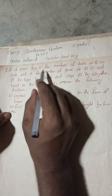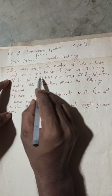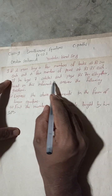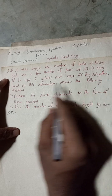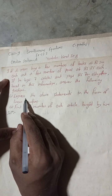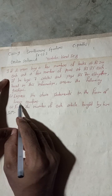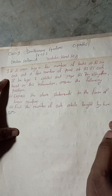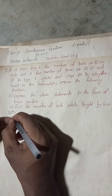A man buys a few number of books at Rs200 each and a few number of pens at Rs25 each. If he buys 7 articles and pays Rs700 altogether. Based on this information, answer the following questions: express the above statements in the form of linear equations, and find the number of each article bought by him.